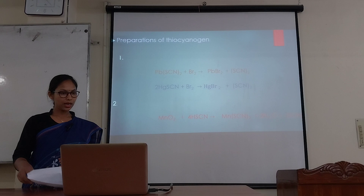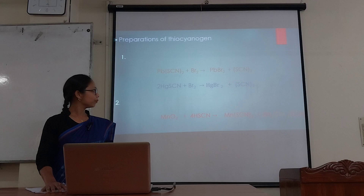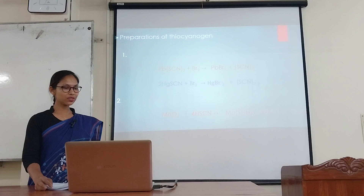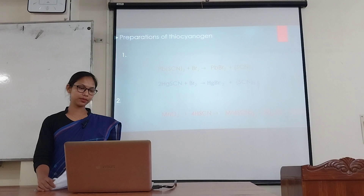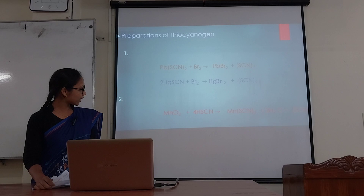Preparation of thiocyanogen: thiocyanogen can be prepared by reacting lead thiocyanate with bromine in ether. Two reactions are given below. Another preparation of thiocyanogen is the reaction of manganese oxide with thiocyanic acid.